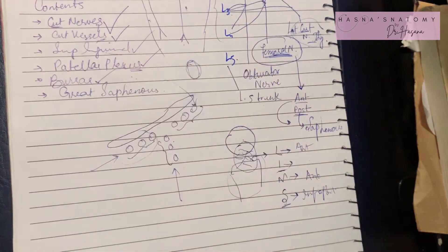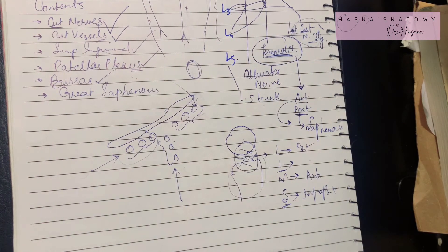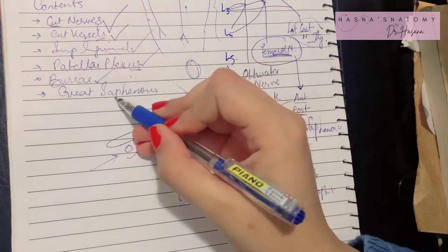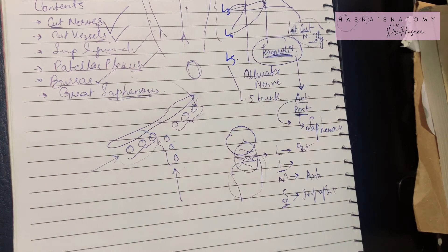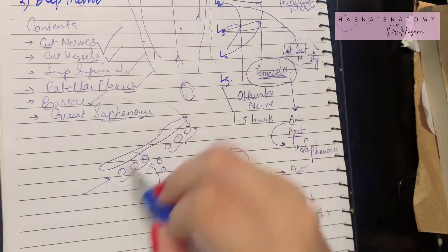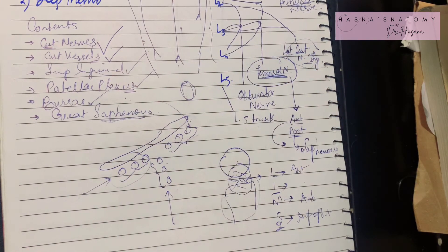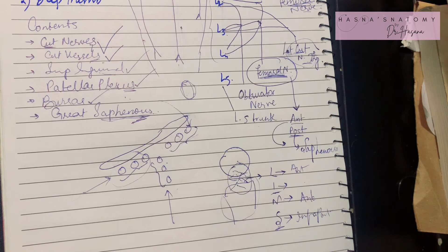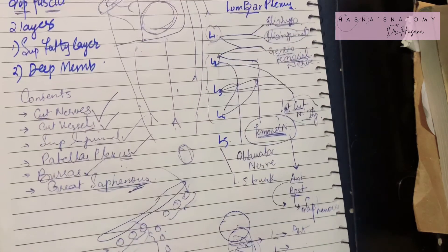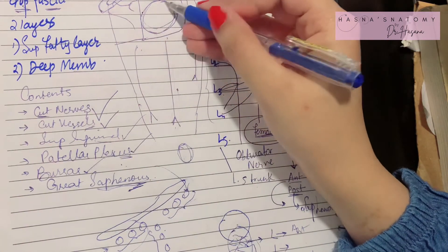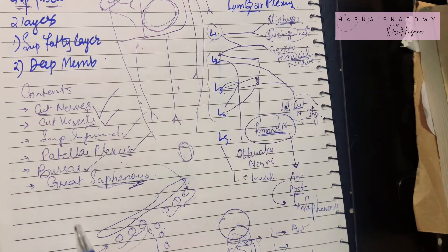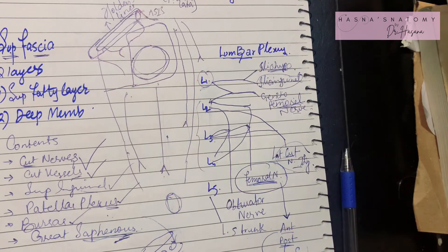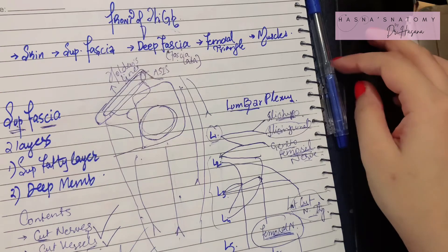Multiple bursas also lie in this region — water balloon-like structures that reduce friction. Finally, the great saphenous vein, which will be discussed in detail in the next lectures, is the longest vein of the body. It comes from the medial side of your leg and eventually enters your femoral vein by passing through the saphenous opening. That was all for the superficial fascia of the front of the thigh.